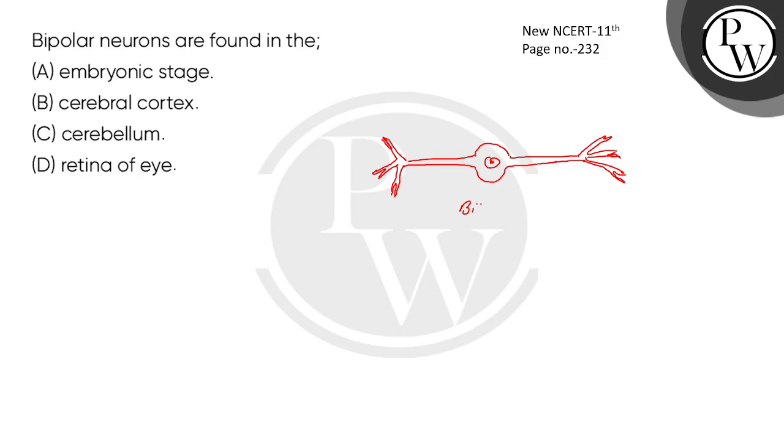Bipolar Neurons are found in the Retina of Eye. Retina of Eye. Correct option D.